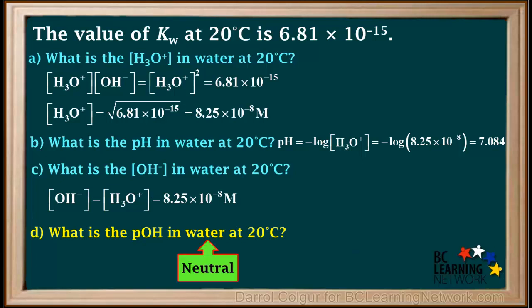However, because water is neutral, we know that the hydroxide ion concentration is equal to the hydronium ion concentration. Therefore, the pOH is equal to the pH, which is 7.084.